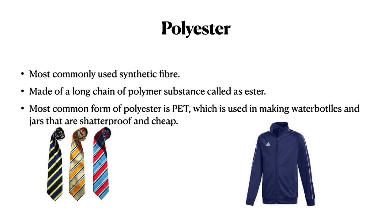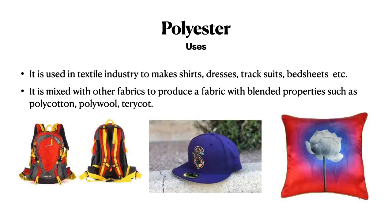Polyester is one of the most commonly used synthetic fibers. It is made out of a long chain polymer of a substance called ester. One of the most common forms of polyester is PET — the material used to make water bottles. Polyester is used in the textile industry to make shirts, dresses, track suits, and bed sheets. It can be blended with cotton or wool to obtain poly-cotton, poly-wool, and terricot. It is also used in bags, caps, and pillows.